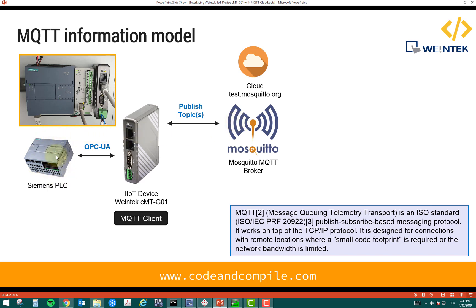Publishing a topic means whatever information I want from my PLC — such as temperature or level — I can push to the cloud. This will be sent as a published topic. For testing the cloud, I'm using test.mosquitto.org, so my information will go to this server. My IoT device is also capable of subscribing to a topic, meaning it can read information from the cloud, and I can use that information in this PLC or another PLC.